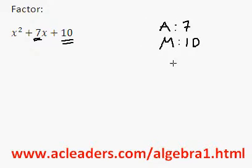I think that most of you would be able to say right away that those numbers would be 2 and 5, because 2 plus 5 is 7, 2 times 5 is 10.